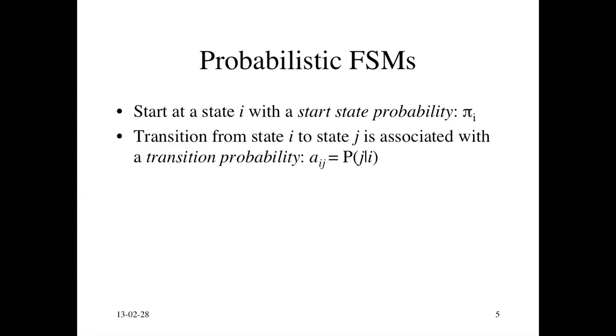A transition from state i to state j is associated with this transition probability, a sub ij. You should think about this as this conditional probability, p of j given i. We're going to a state j given that we're at state i. But it's kind of wordy to write that down, so we're going to just say a sub ij.